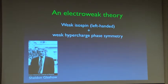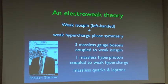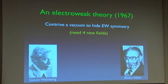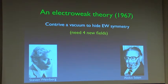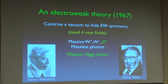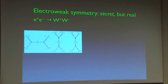The electroweak theory is based on SU(2) weak isospin times a U(1) hypercharge symmetry, first worked out by Sheldon Glashow, giving three massless gauge bosons coupled to weak isospin and one coupled to hypercharge — no photon yet, and massless fermions. Weinberg and Salam then applied the Higgs mechanism: a vacuum state that hides the electroweak symmetry — requiring four scalar fields — gives mass to the W bosons, mediators of beta decay, leaves a massless photon, predicts the Z boson, and leaves one massive scalar: the Higgs boson.